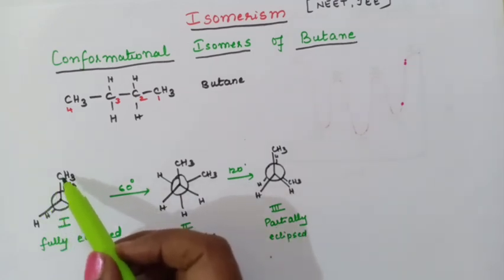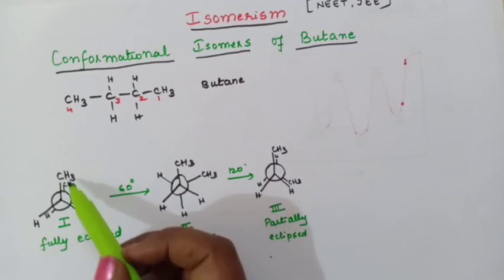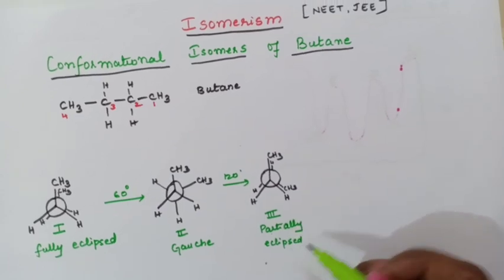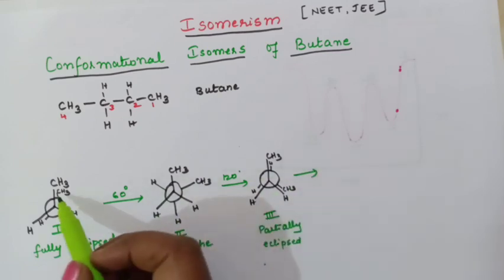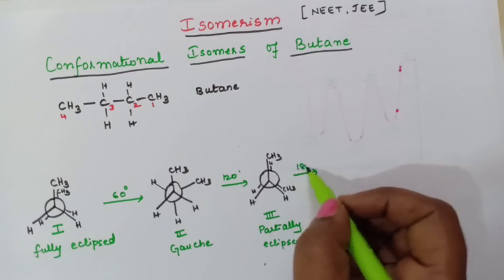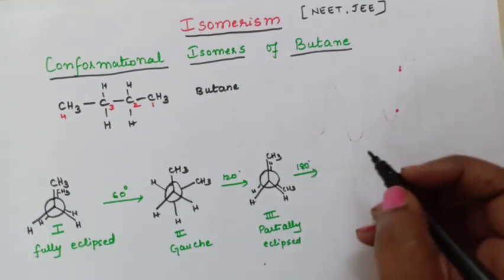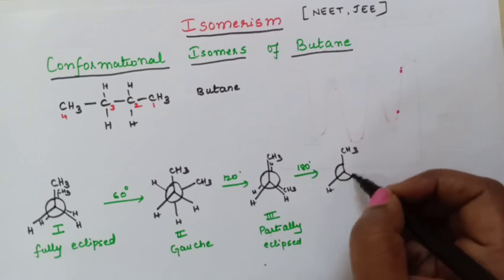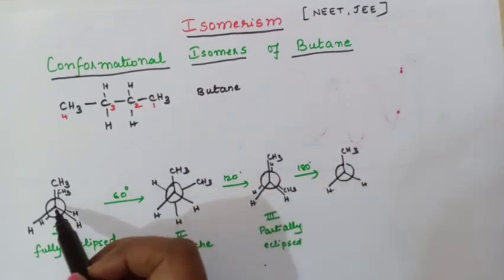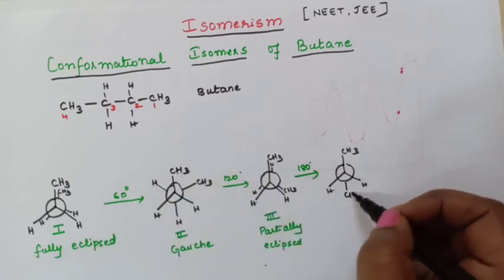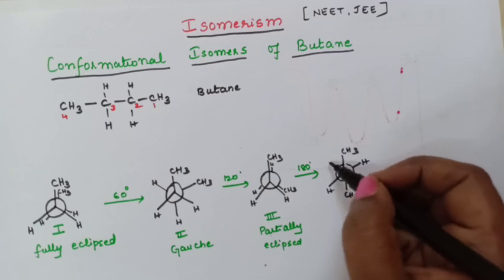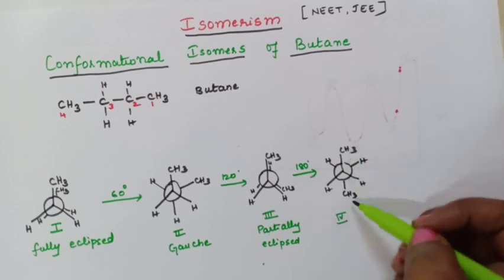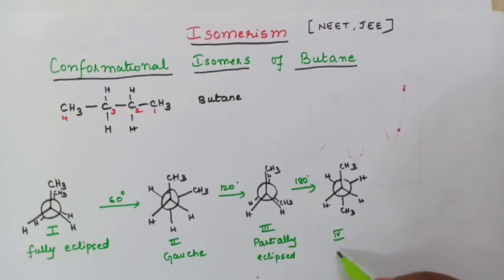If the methyl groups are close to each other, we call it fully eclipsed. If methyl and hydrogen are close together, we call it partially eclipsed. Now again we rotate this behind carbon to 180 degrees. Keep the front as it is: CH3, hydrogen, and hydrogen. Rotating the behind carbon to 180 degrees gives methyl group here with hydrogen and hydrogen — this is the 4th structure. Since the methyl groups are exactly opposite to each other, we call it the anti structure.